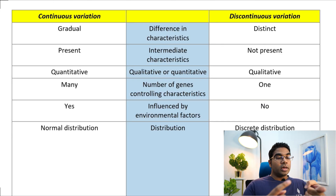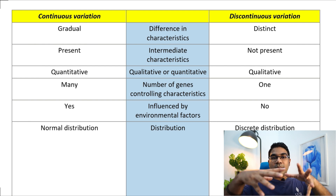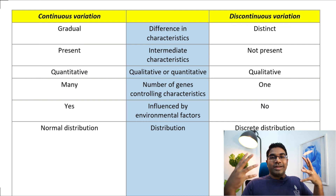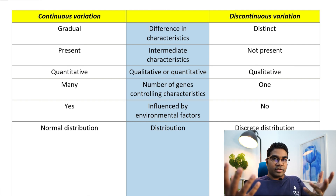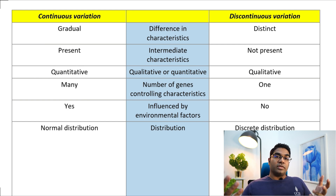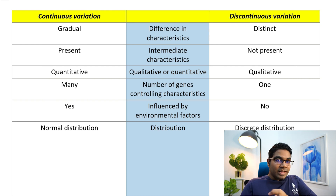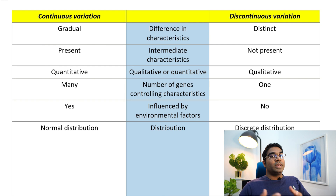To summarize: continuous variation involves characteristics which have intermediate characteristics — values in between — and they are usually quantitative. Discontinuous variation involves characteristics that do not have any intermediate characteristics; they are distinct and usually not quantifiable, such as blood group. If you enjoy videos like this, do subscribe — I'll be producing at least one video a week. I'll see you guys in the next video.